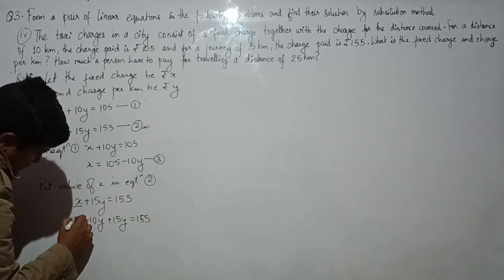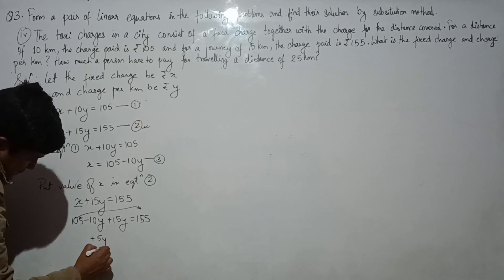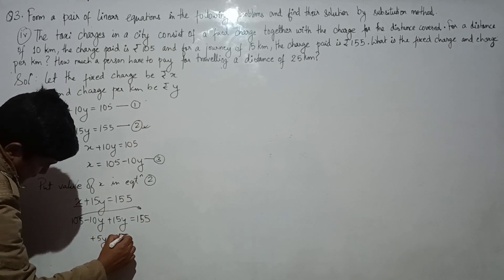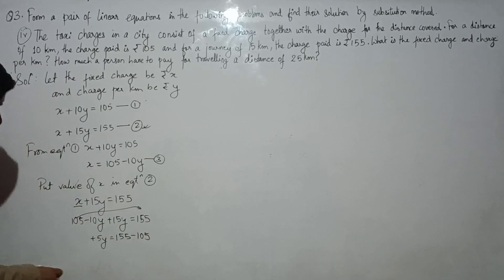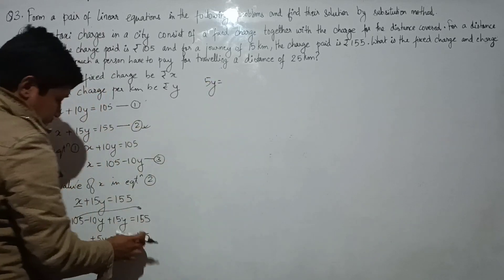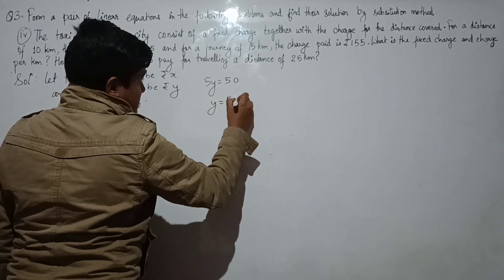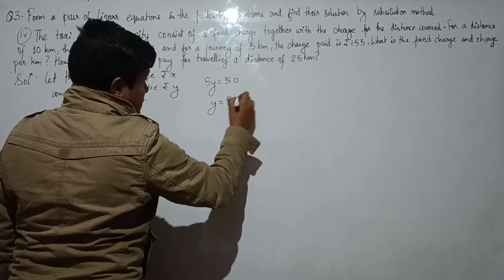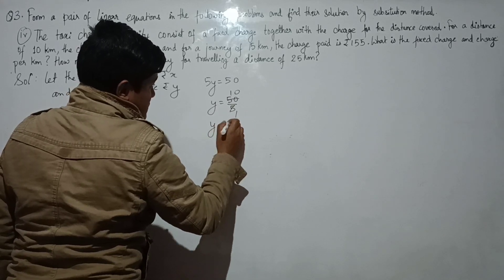We can send the number to the other side and calculate: 5y equals to 155 minus 105, so 5y equals to 50, so y equals to 50 by 5, which is 10. The charge per kilometer is Rs. 10.